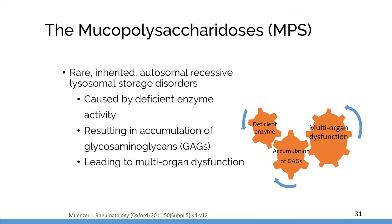Moving on to MPS — these are a large group of disorders caused by deficient enzymes and accumulation of GAG substrate, which affects the body in multiple areas, the so-called dysostosis multiplex.